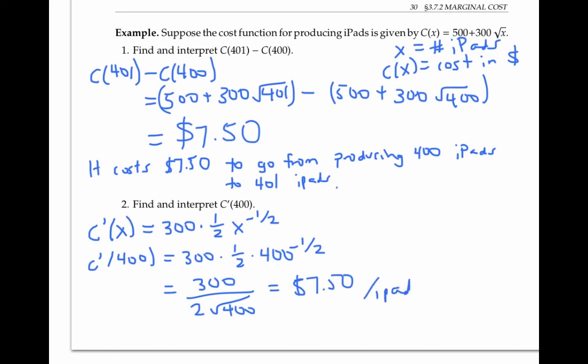Up to rounding to the nearest cent, these two answers are equal. And it makes sense that C'(400) should equal approximately this difference, since C'(400), the derivative, is approximately equal to the average rate of change going from 400 to 401, which is just this difference divided by one.